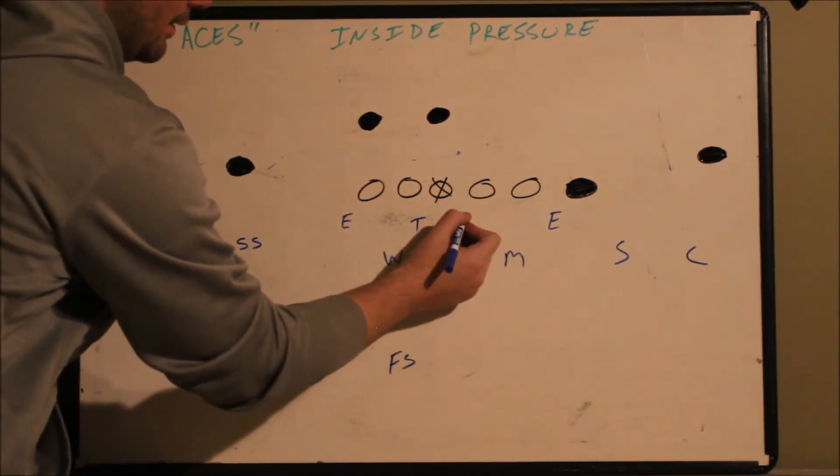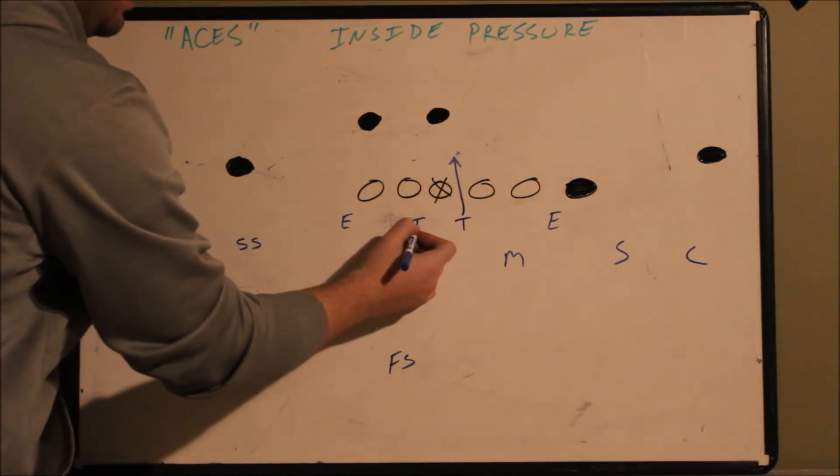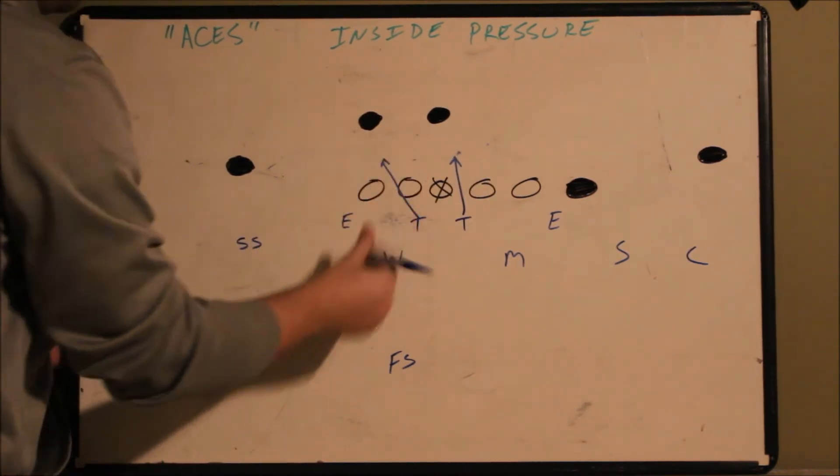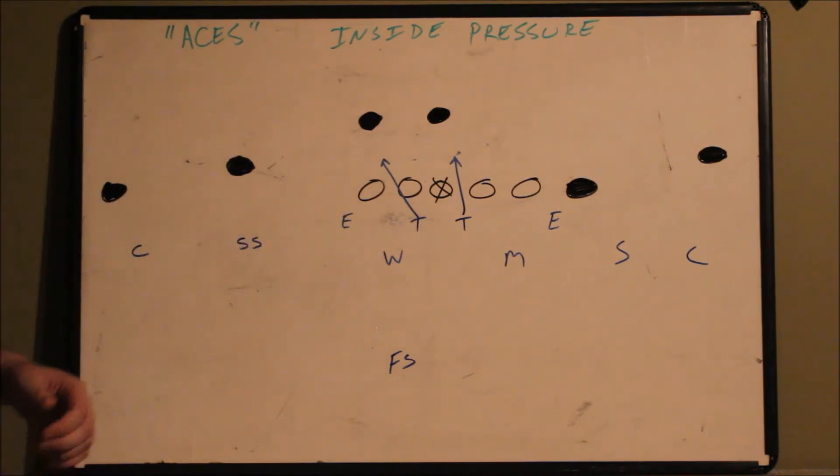Now this defensive tackle, he's got a gap. This defensive tackle is going to slant to B. When this defensive tackle slants to B,